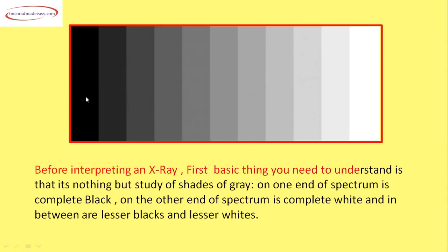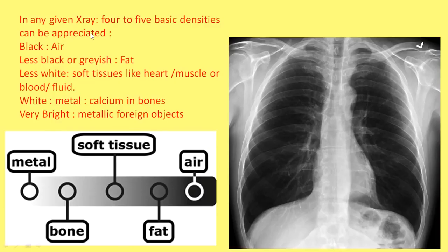On one end of the spectrum is complete black, on the other end is complete white, and in between are lesser blacks and lesser whites. In any given X-ray, 4 to 5 basic densities can be appreciated.